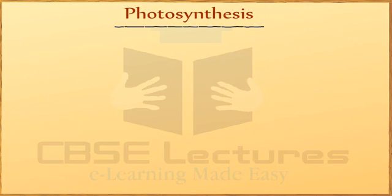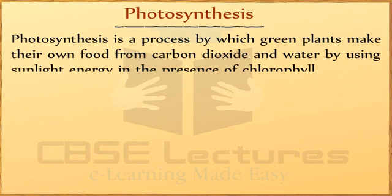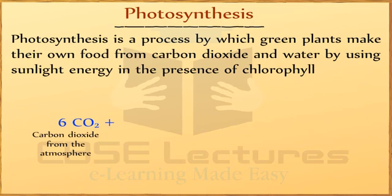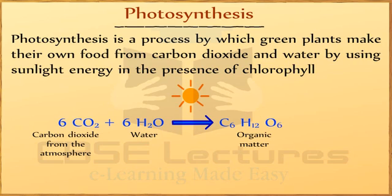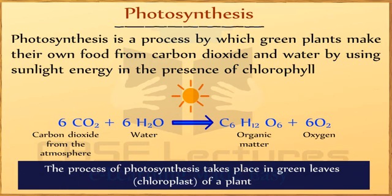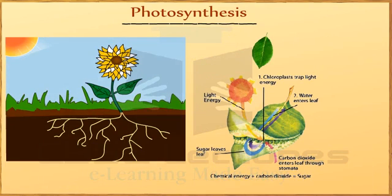Photosynthesis is the process by which green plants make their own food from carbon dioxide and water by using sunlight energy in the presence of chlorophyll. The process of photosynthesis takes place in green leaves and chloroplasts of a plant.